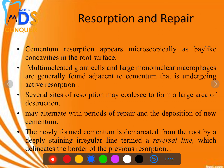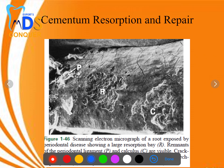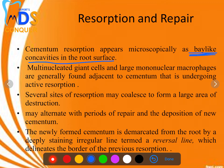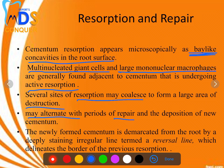Cementum resorption and repair occur together as cementum is a very dynamic structure. Microscopically, resorption makes bay-like concavities in the root surface called resorption lacunae. Multinucleated giant cells and large mononuclear macrophages — similar to osteoclasts and cementoclasts — are involved in active resorption. Multiple resorption sites may coalesce into a large area, showing alternating periods of repair and resorption.